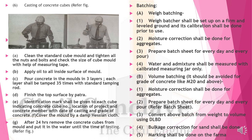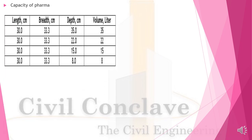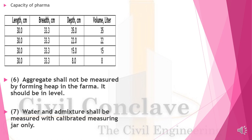Convert batch weights to volume using DLBD. Bulkage correction for sand shall be done and marking done on the farma. Farma capacities: 35 liters (L=30cm, B=33.3cm, D=35cm), 22 liters (L=30, B=33, D=22), 15 liters (D=15, B=33.3, L=30), 8 liters (D=8, B=33.3, L=30). Aggregate shall not be measured by forming a heap in the farma — it should be level. Water and admixture shall be measured with a calibrated measuring jar only.